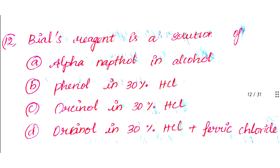Question number 12: Bial's reagent is a solution of. Option A: Alpha-naphthol in alcohol. Option B: Phenol in 30% HCl. Option C: Orcinol in 30% HCl. Option D: Orcinol in 30% HCl plus ferric chloride. The answer is Option D: Orcinol in 30% HCl plus ferric chloride.